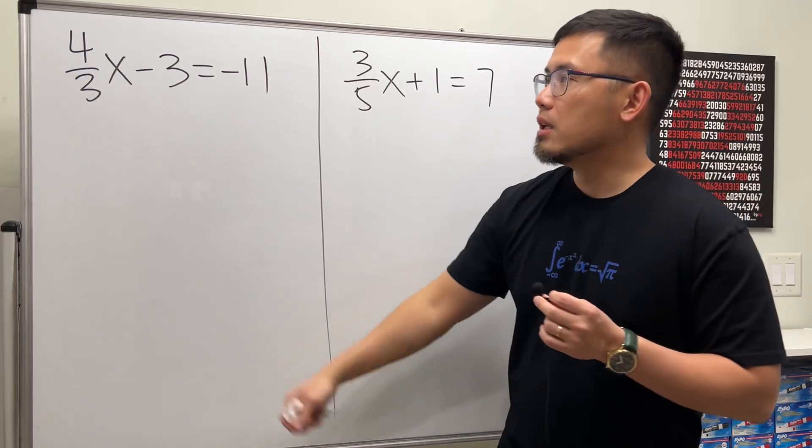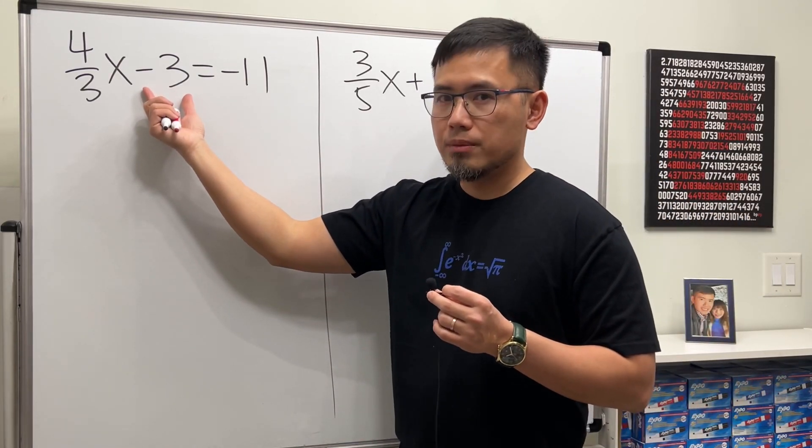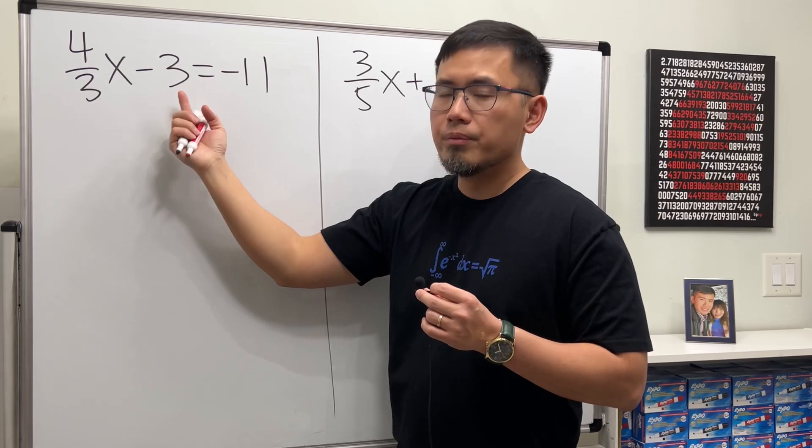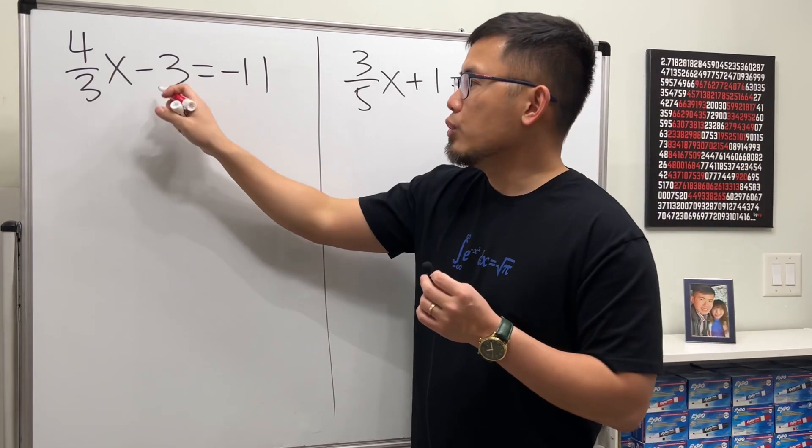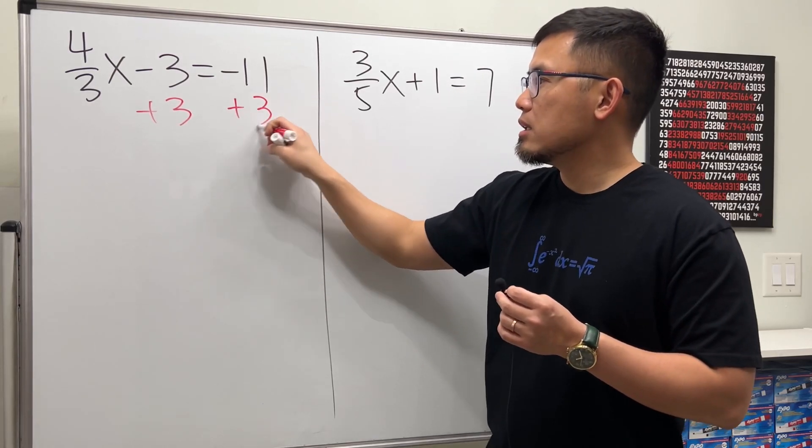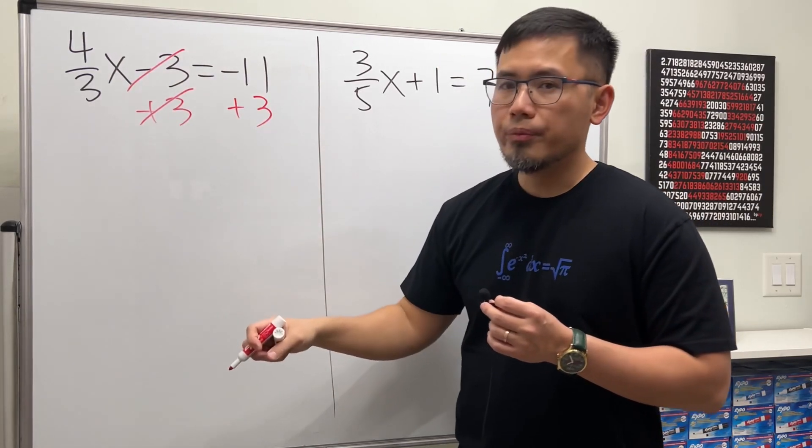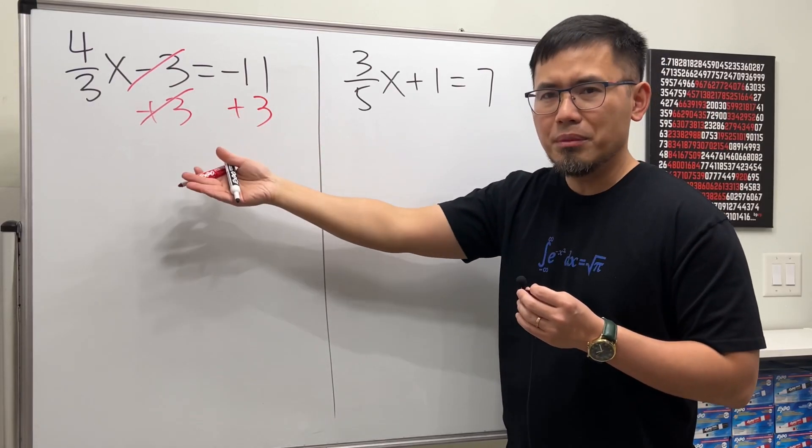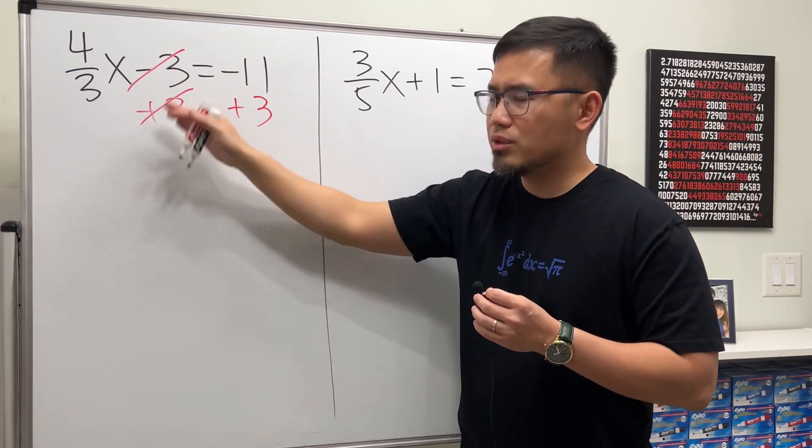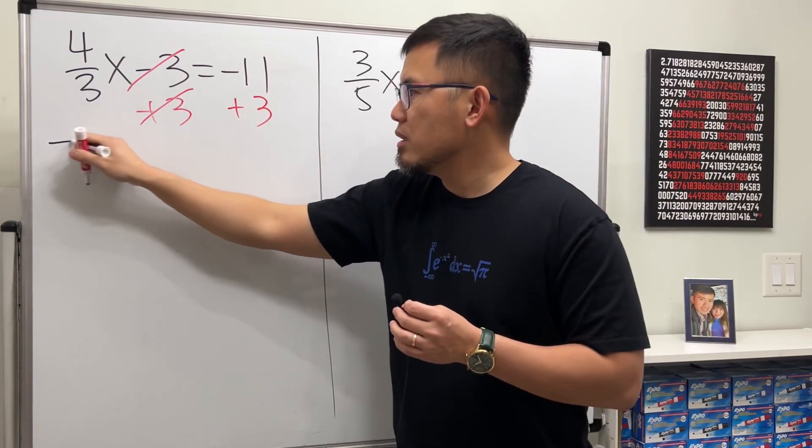So what you want to do first is get rid of this negative 3. To get rid of that, you do the opposite, which is to add. Go ahead and add 3 on both sides so that they can cancel. As soon as you show all the steps, you'll see that it makes sense. Minus 3 plus 3 is just zero.